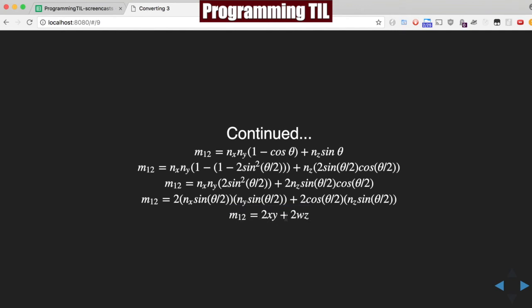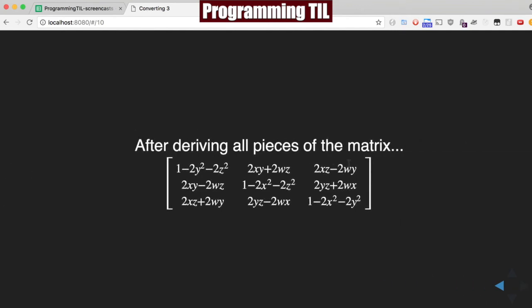So 2xy, 2wz. We can do each of these for all of the pieces of the matrix, and you can see the standard formula here for the diagonals. It's going to be 1 minus 2y squared minus 2z squared. In the middle, 2x squared, 2z squared. And the last one, of course, 2x squared minus 2y squared.